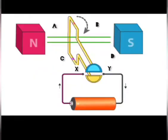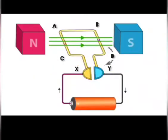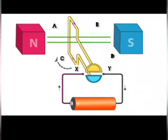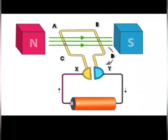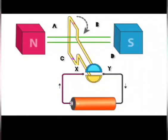Current in the coil ABCD enters from the source battery through conducting brushes X and flows back to the battery through brushes Y. I have noticed that the current in the arm AB of the coil flows from A to B.